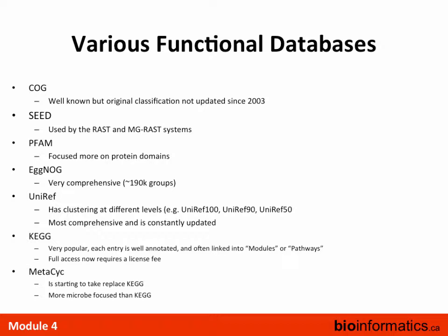UniRef is put out by UniProt. It basically clusters proteins down into different levels: UniRef100 means sequences 100% identical get collapsed into one; UniRef90 collapses anything within 90% identity; UniRef50 collapses within 50% identity, making a less comprehensive but faster database. A nice feature is that it links these clusters to organisms and also links between clustering levels. It's automated and well-maintained.